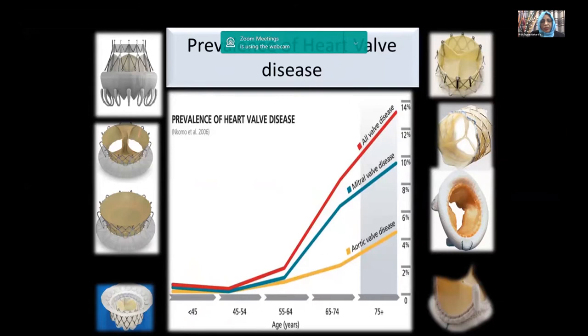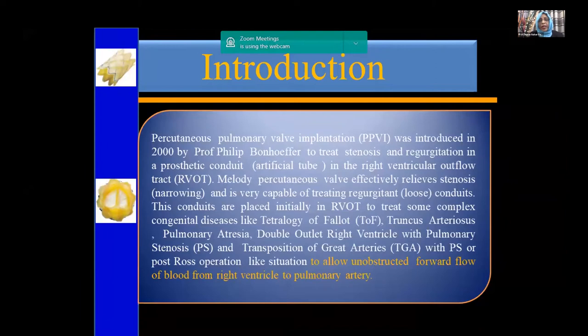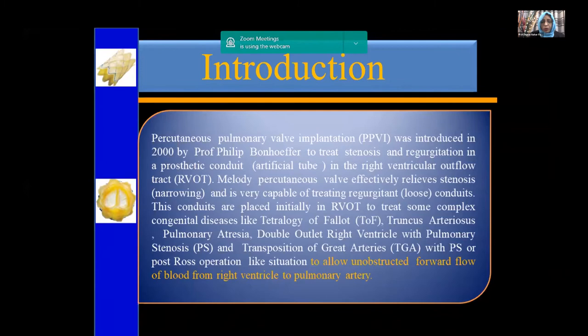TAVR diseases are diseases of the adult, and mitral valve diseases are more common than aortic valve disease. These are very uncommon in the pediatric age group. In the pediatric age group, we deal with the pulmonary valve, which is not actually a replacement for a primary disease. Transcatheter pulmonary valve implantation was started in 2000 when Professor Philip Bonhoeffer treated stenosis and regurgitation in a prosthetic conduit in the right ventricular outflow tract. This conduit is placed initially in the RVOT to treat complex congenital heart diseases such as tetralogy of Fallot, truncus arteriosus, pulmonary atresia, double outlet right ventricle, transposition of great arteries, and patients who had a Ross procedure.